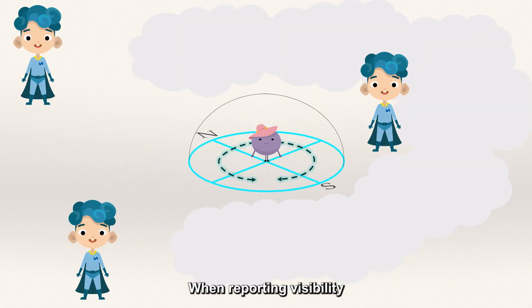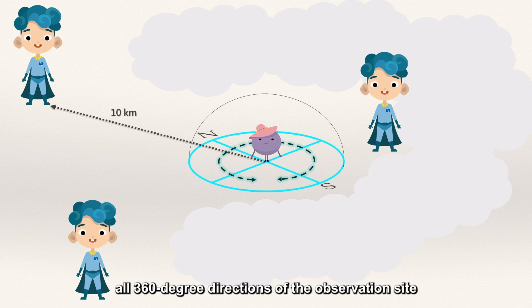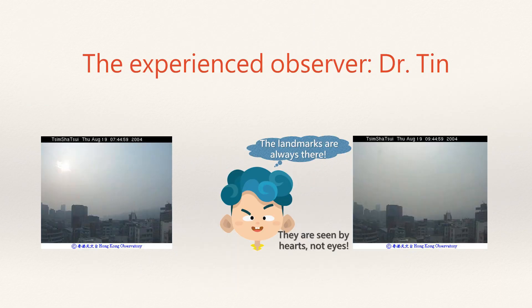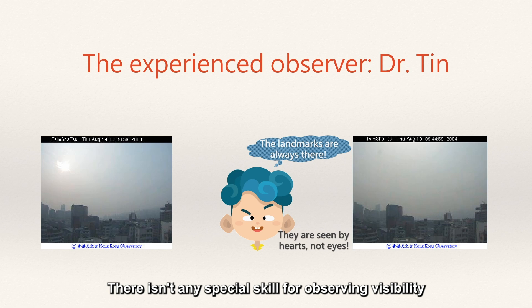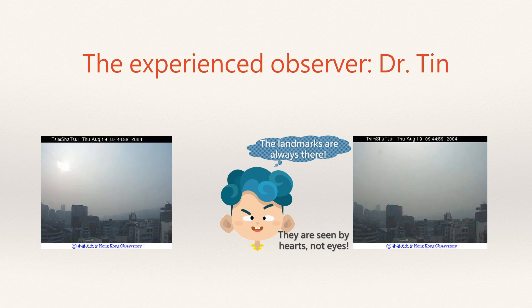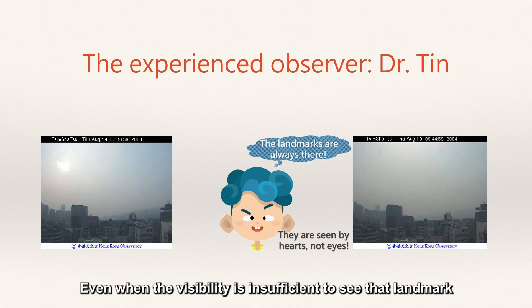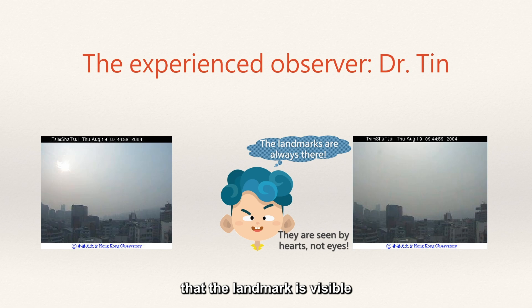When reporting visibility, remember you should observe all 360-degree directions of the observation site and report the worst visibility among all directions. There isn't any special skill for observing visibility — just carefully observe which landmarks you can see. But be careful: if you often make observations in the same location, sometimes you're too familiar with certain landmarks. Even when the visibility is insufficient to see that landmark, there's an impression on your mind that it is visible. You need to be careful about this.